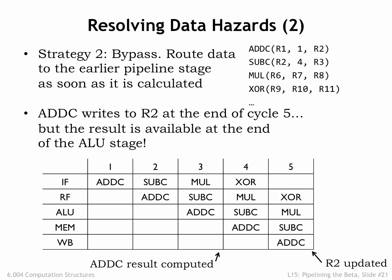In our example, even though ADDC doesn't write R2 until the end of cycle 5, the value that will be written is computed during cycle 3 when ADDC is in the ALU stage. In cycle 3, the output of the ALU is the value needed by SUBC that's in the RF stage in the same cycle. So if we detect that the RA field of the instruction in the RF stage is the same as the RC field of the instruction in the ALU stage, we can use the output of the ALU in place of the stale RA value being read from the register file. No stalling necessary!